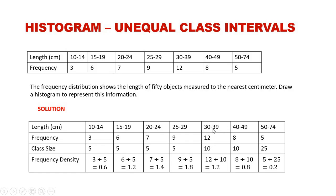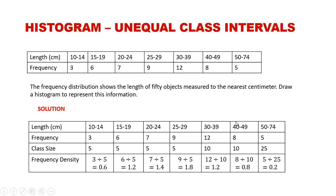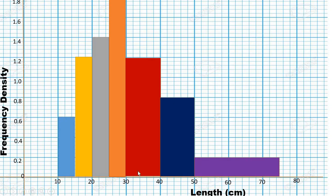For 30 to 39, the class size is 10 and the frequency density is 1.2. The bar spans from 30 to 40, which is a width of 10. For 40 to 49, the class size is also 10 and the frequency density is 0.8, with the bar spanning from 40 to 50.